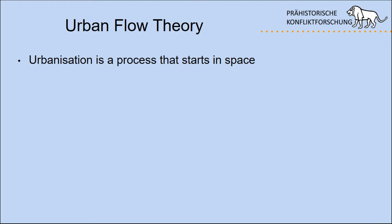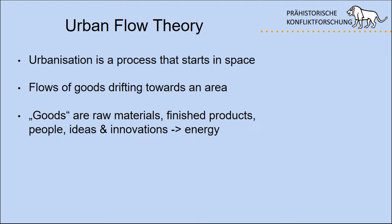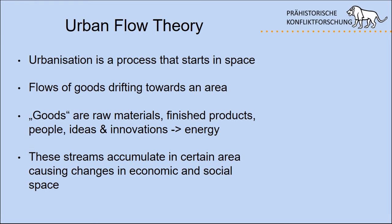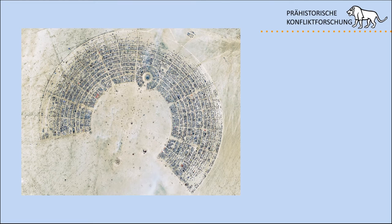Urban flow theory argues that urbanization is a process that starts in space, with flows of goods drifting through space towards an area. Goods can be raw materials, finished products, people, ideas, innovations, or some authors say it's just energy moving through space. These flows of goods can accumulate in a certain area, causing changes in the economic and social space. Keep that in mind as we move towards the model.